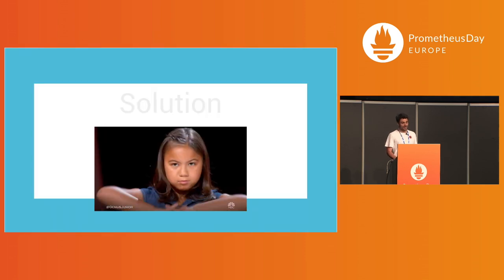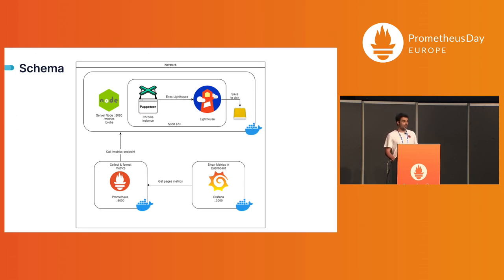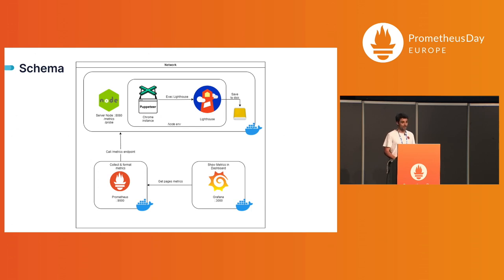Our solution is basically this schema: we have a Node process with Puppeteer and Lighthouse on it. We are saving data to disk in a local environment or on S3 on AWS, and working with Prometheus and Grafana to collect and publish those metrics on a Grafana dashboard for analysis. We are using Docker for all of them, for portability in both local and cloud environments.